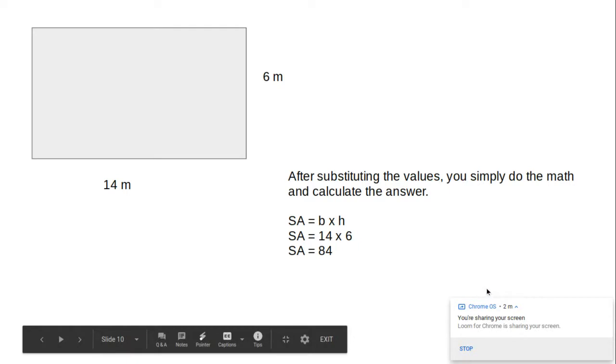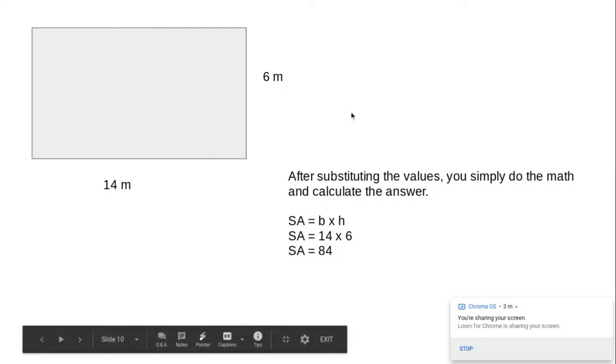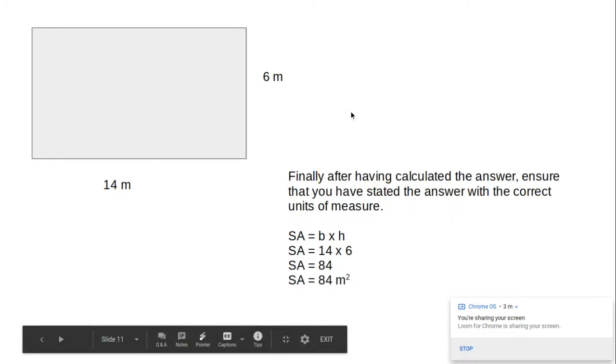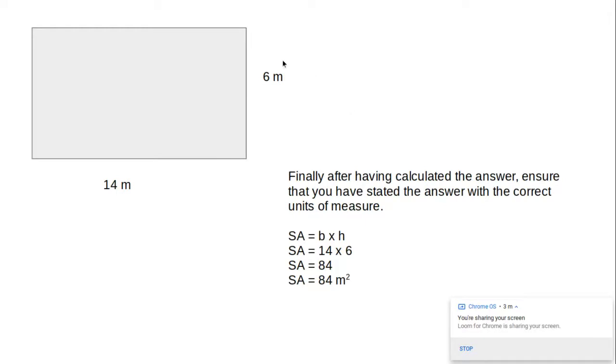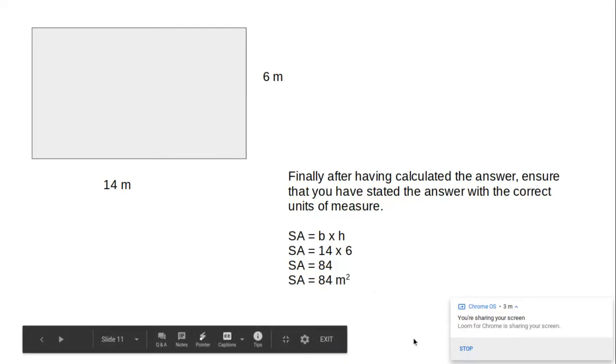And as before, the most important part of this is not only doing the multiplication, knowing the formula, but making sure that we state the answer in its units of measure. We have 2 meters that are multiplied together, making sure that 84 is meters squared.